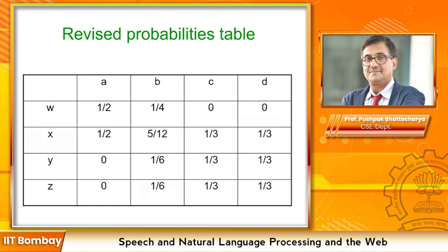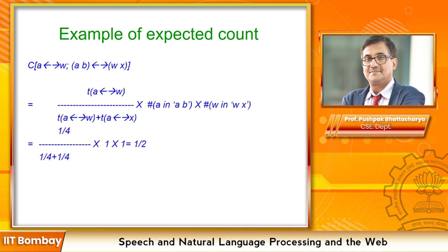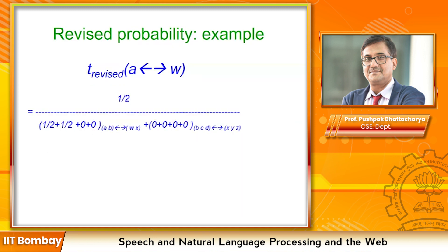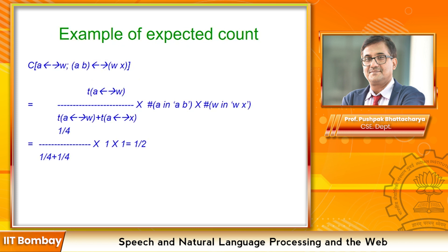This algorithm depends on two variables: one is the parameter which needs to be estimated, and the other is the hidden variable whose expected count needs to be maintained for parameter estimation. C is expressed in terms of T and T is expressed in terms of C. Computation of T is the parameter estimation — this is called the maximization step. Computation of C is the expected count — this is called the expectation step.